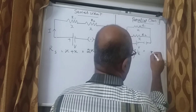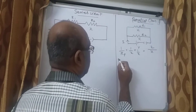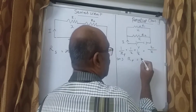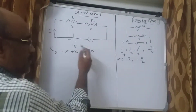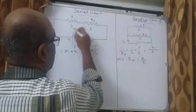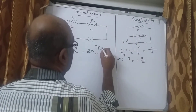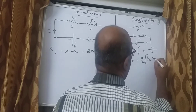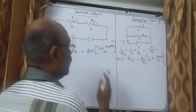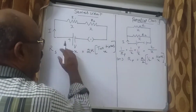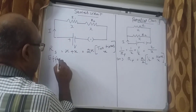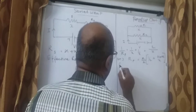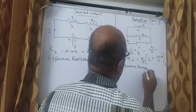From the parallel formula, 1/Rp = 2/X, so Rp = X/2. The series resistance is 2 times X, but the parallel resistance is half of X. Comparing both circuits, we can analyze that in the series circuit the effective resistance increases, whereas in the parallel circuit the effective resistance decreases.